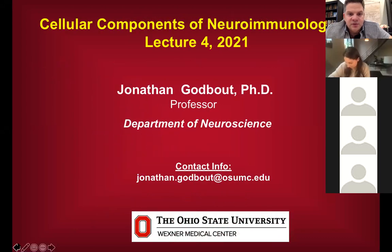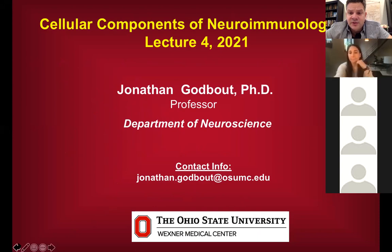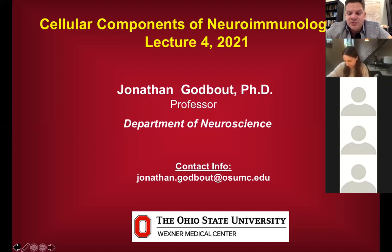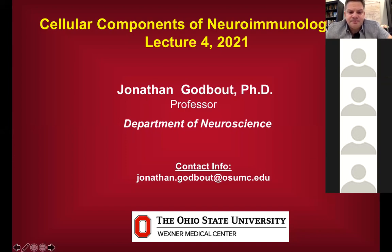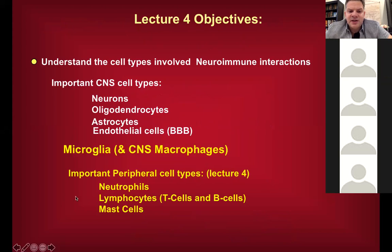Today we'll finish our discussion on microglia and CNS macrophages, then talk more about neutrophils, lymphocytes, and mast cells. We're continuing from where we left off on Thursday covering different cell types.